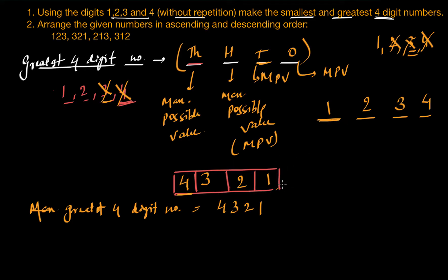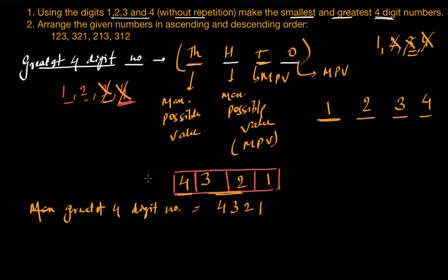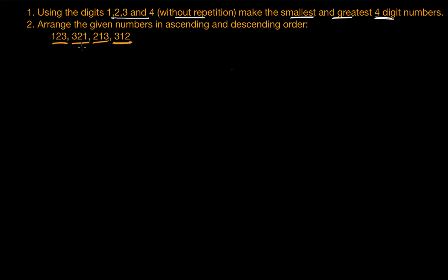This is why this arrangement always gives you the greatest number. Now we are going to our next question: arrange the given numbers 123, 321, 213, and 312 in ascending and descending order.